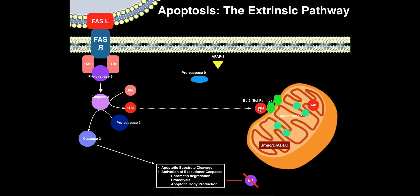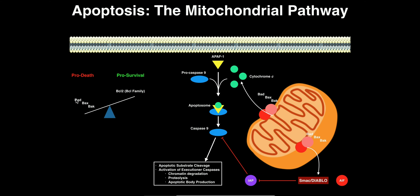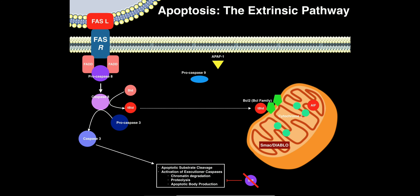T-BID travels to the mitochondria, where it blocks BCL family proteins from the pores and facilitates dimerization of pro-death proteins — particularly BAK. This causes leakage of mitochondrial proteins into the cytoplasm. So once T-BID becomes activated by caspase-8, it activates the mitochondrial pathway, allowing cytochrome C, AIF, and Diablo to leak out, which will also lead to those downstream apoptotic effects.